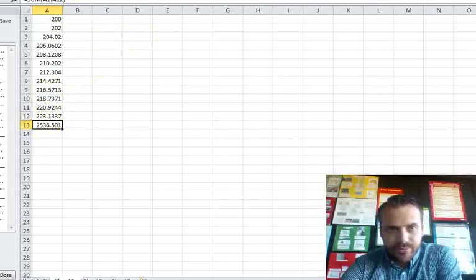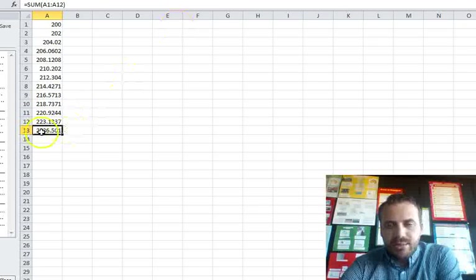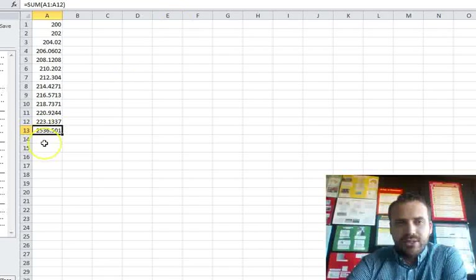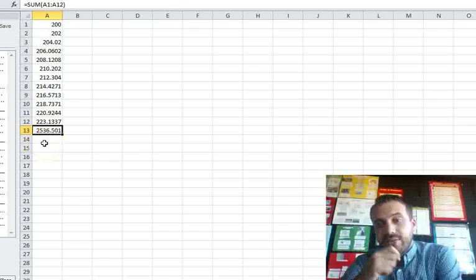Now, I can show you my formula. This last number was just me adding up all of those terms. And sure enough, $2,536.50.